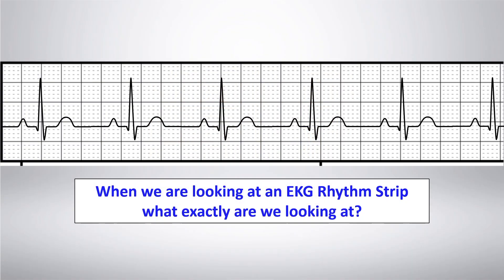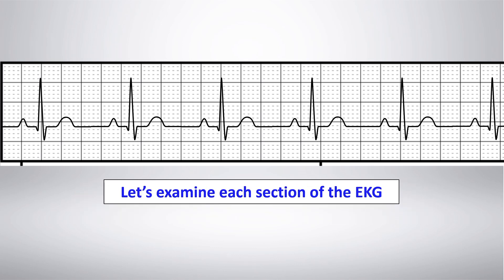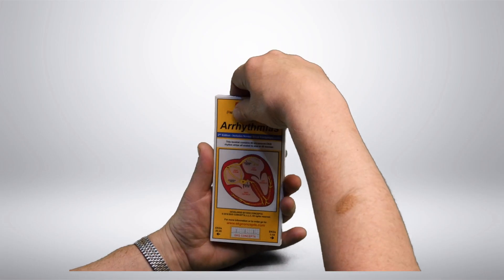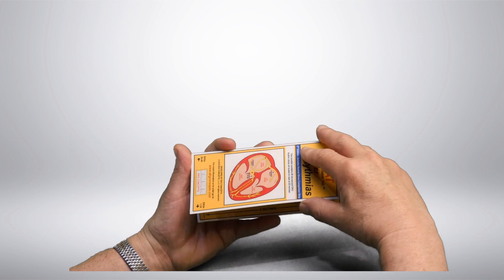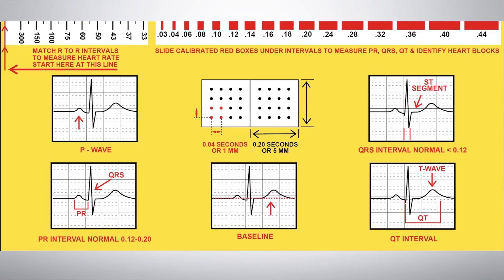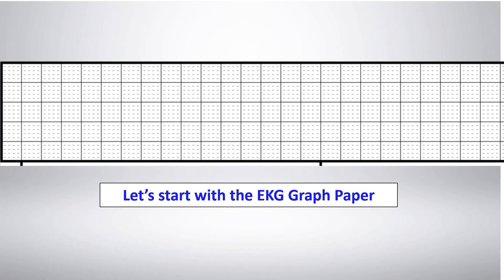When we are looking at an EKG rhythm strip, what exactly are we looking at? Let's examine each section of the EKG, starting with the EKG graph paper. Panel 1 of the pocket RCAT for arrhythmias illustrates all the EKG rhythm waves and cardiac intervals with their relationships to the EKG graph paper.